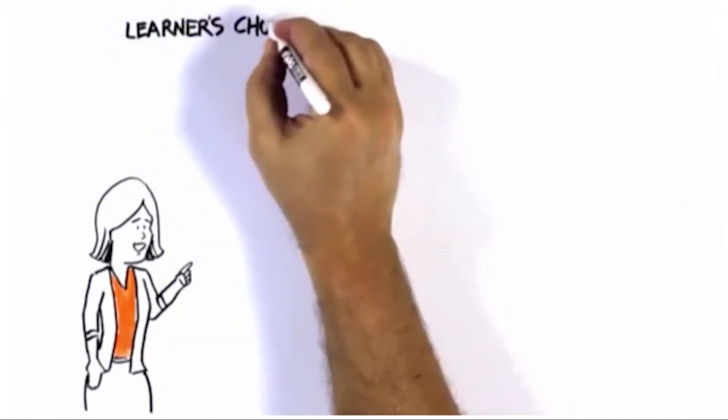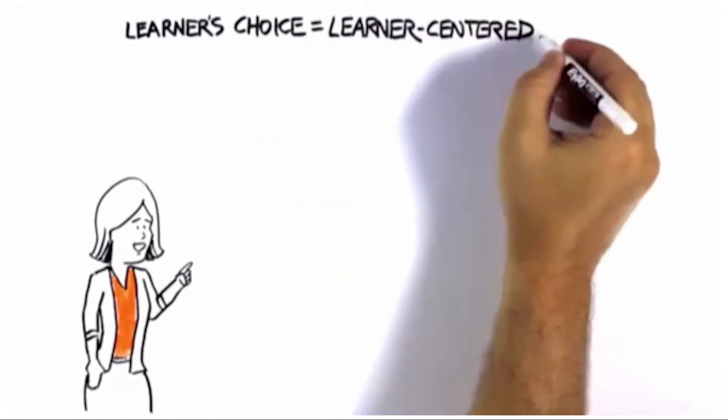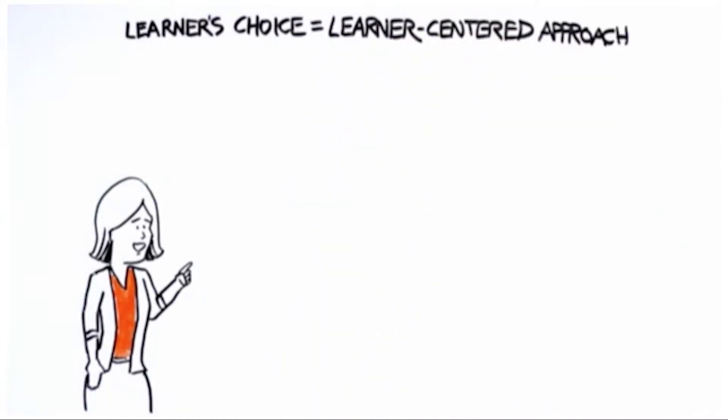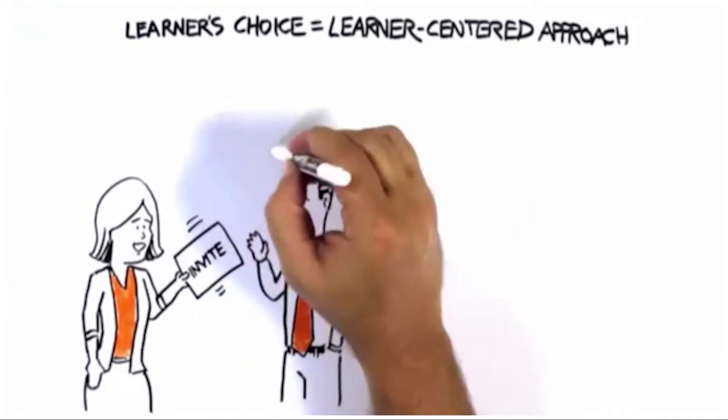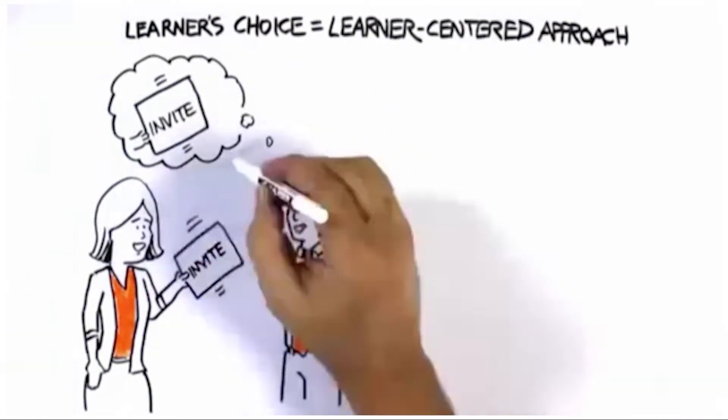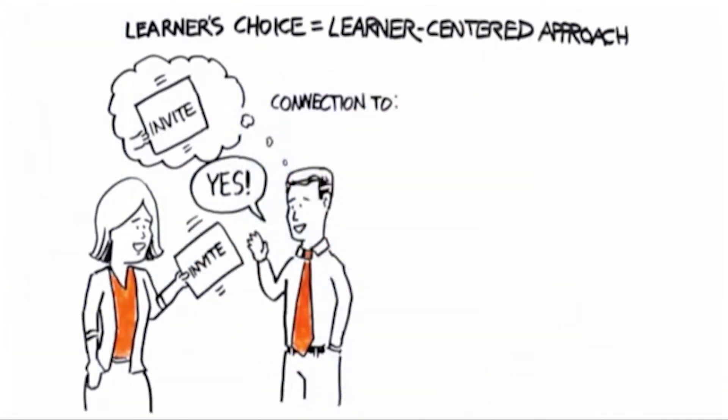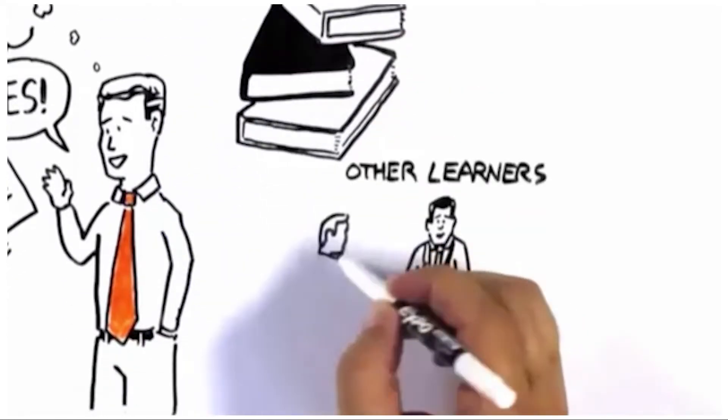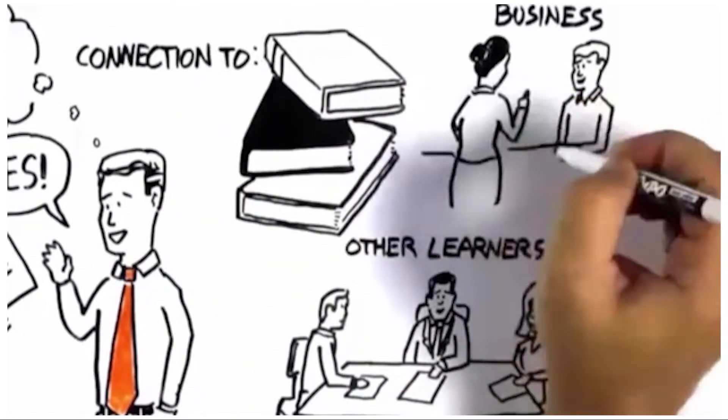Motivating and engaging adult learners involves the practical ways you can create learner-centered content that presents an invitation to the learner. Accepting the invitation allows learners to make various types of connections to the content, with other learners, and to the business.